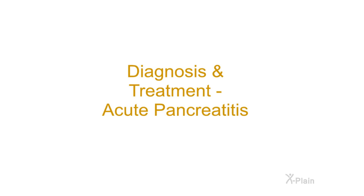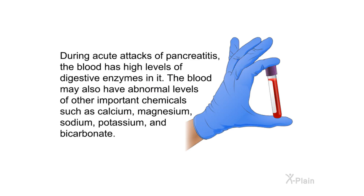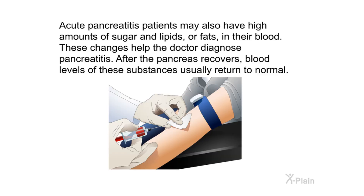During acute attacks of pancreatitis, the blood has high levels of digestive enzymes. The blood may also have abnormal levels of other important chemicals such as calcium, magnesium, sodium, potassium, and bicarbonate. Patients may also have high amounts of sugar and lipids or fats in their blood. These changes help the doctor diagnose pancreatitis. After the pancreas recovers, blood levels of these substances usually return to normal.